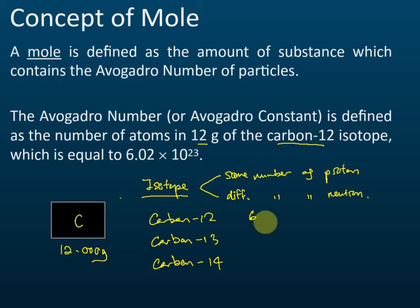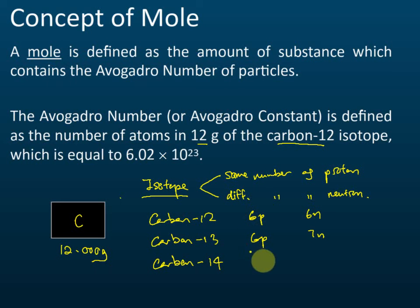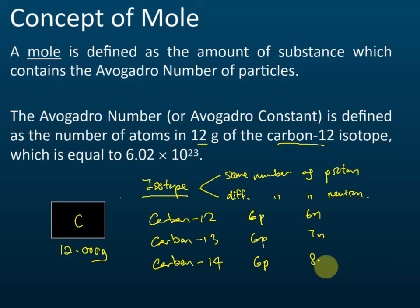For carbon-12, it has six protons and six neutrons. Carbon-13 has six protons and seven neutrons — same number of protons but different number of neutrons. Carbon-14 has six protons and eight neutrons.